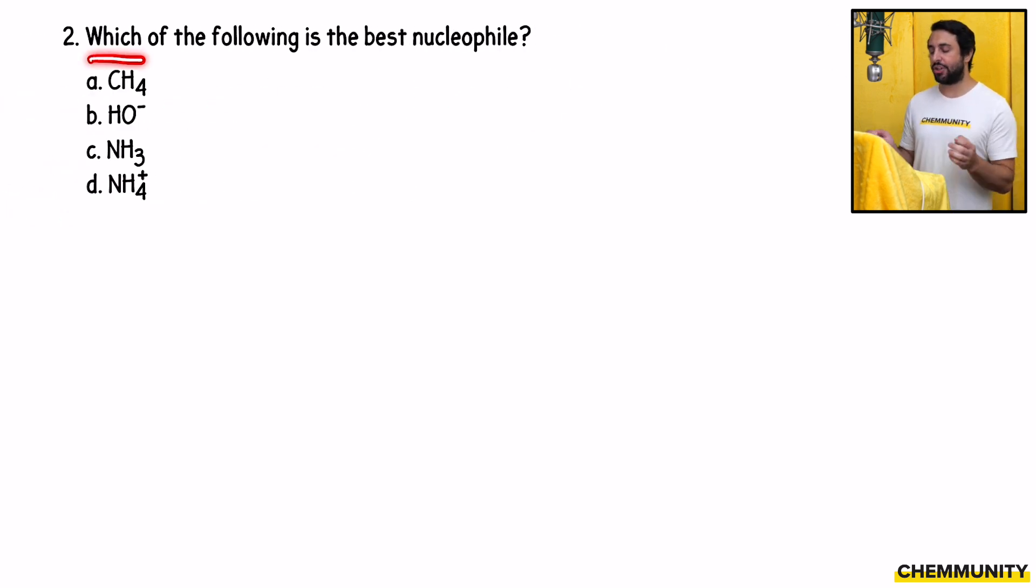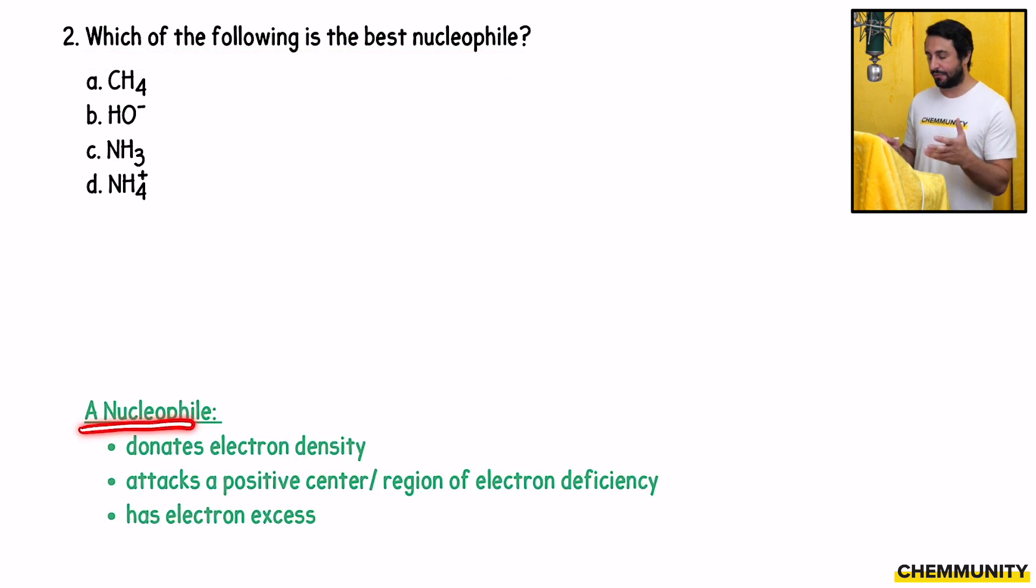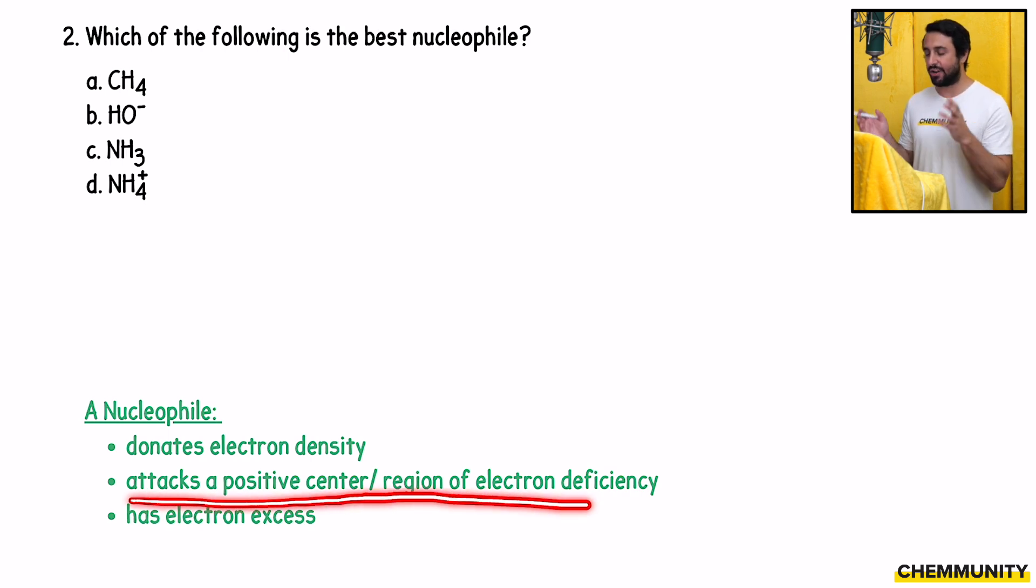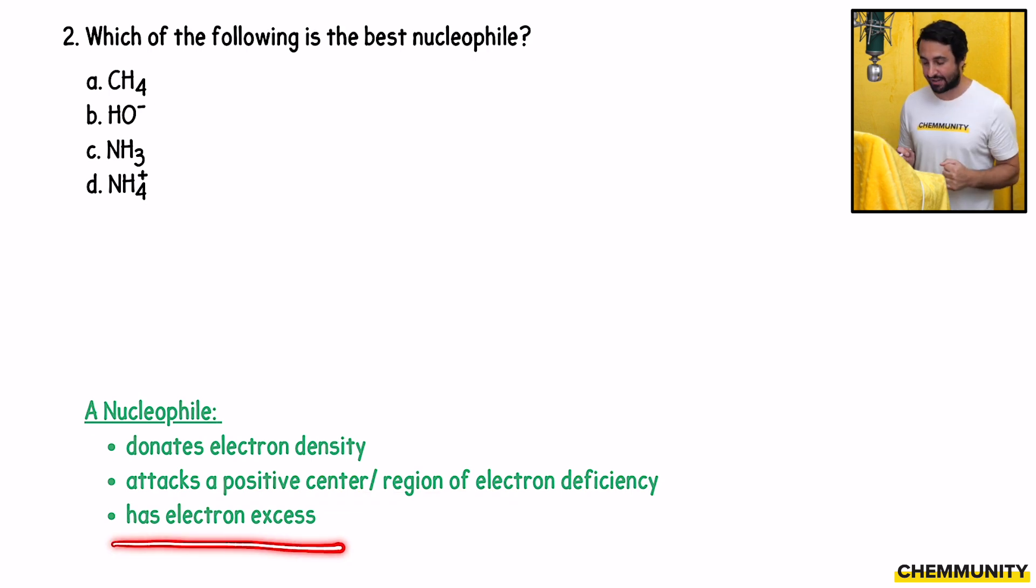Number two asks, which of the following is the best nucleophile? A nucleophile is something that can donate electron density. It can attack some positive center, some region of electron deficiency. So a nucleophile is something that has electron excess.